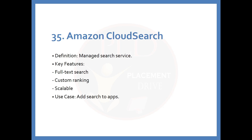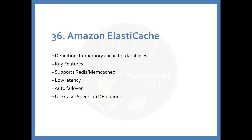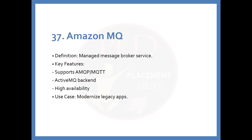The 35th service is Amazon CloudSearch. The definition is: a managed search service. Key features include full-text search, custom ranking, and scalability. The use case is adding search to apps. The 36th service is Amazon ElastiCache. The definition is: in-memory cache for databases. Key features include support for Redis and Memcached, low latency, and auto failover. The use case is speeding up database queries.